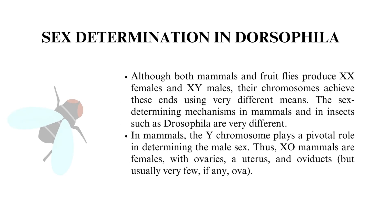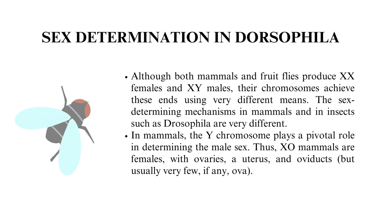Regarding sex determination in Drosophila — although both mammals and fruit flies produce XX females and XY males, their chromosomes achieve these ends using very different means. The sex-determining mechanisms in mammals and in insects such as Drosophila are very different.